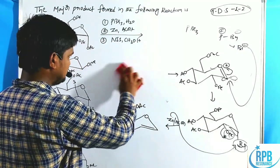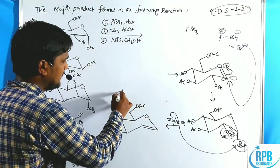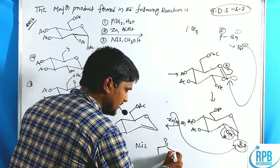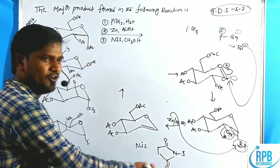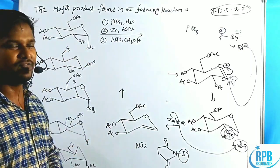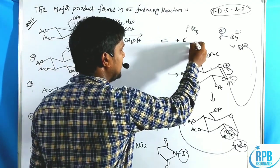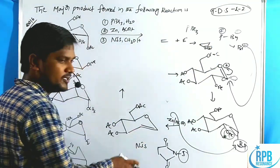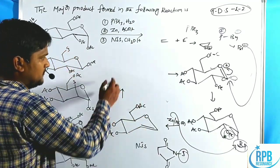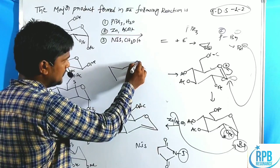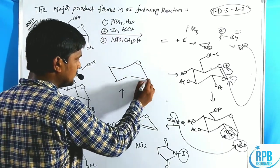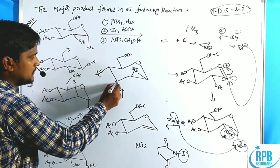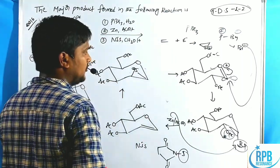After formation of the double bond, the third reagent given is NIS — N-iodosuccinimide. NIS donates an iodine electrophile. When the alkene is treated with the halogen electrophile, it forms a halonium ion — specifically an iodonium ion — with above-the-plane chemistry.